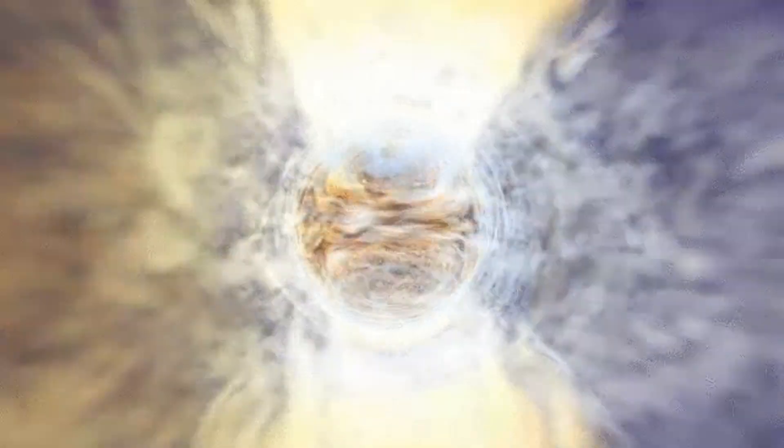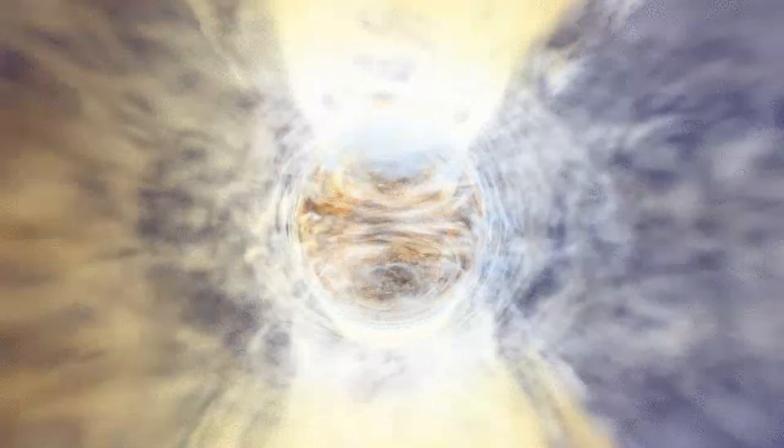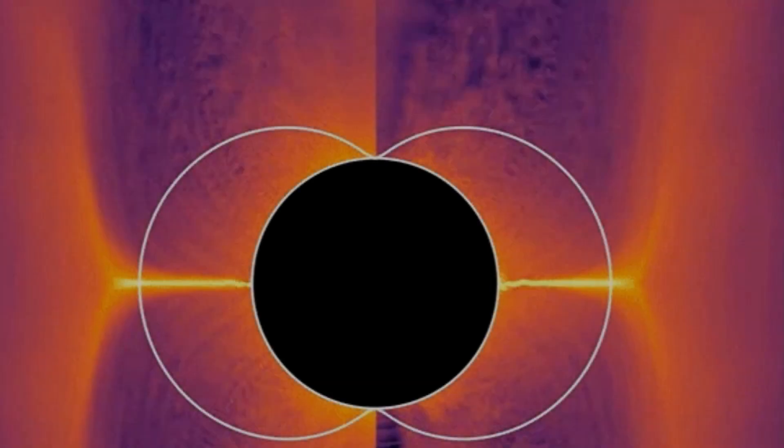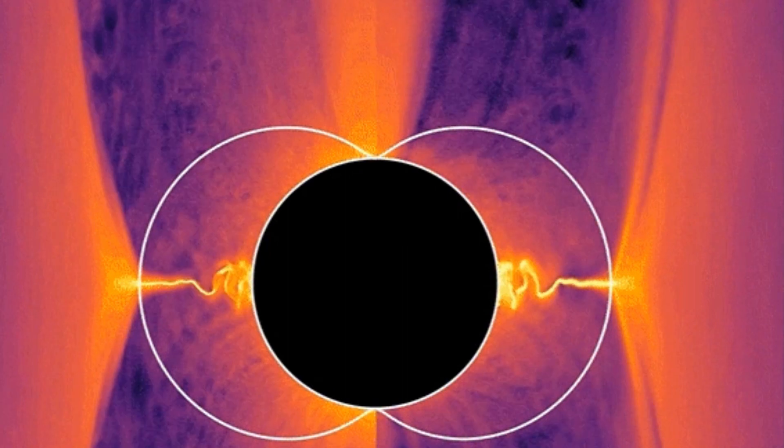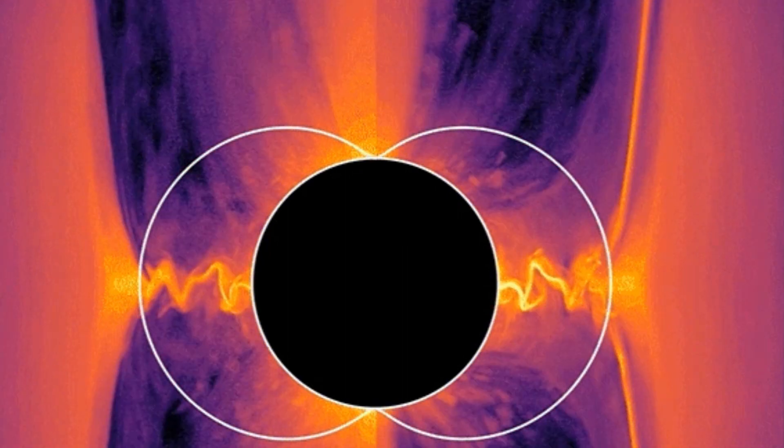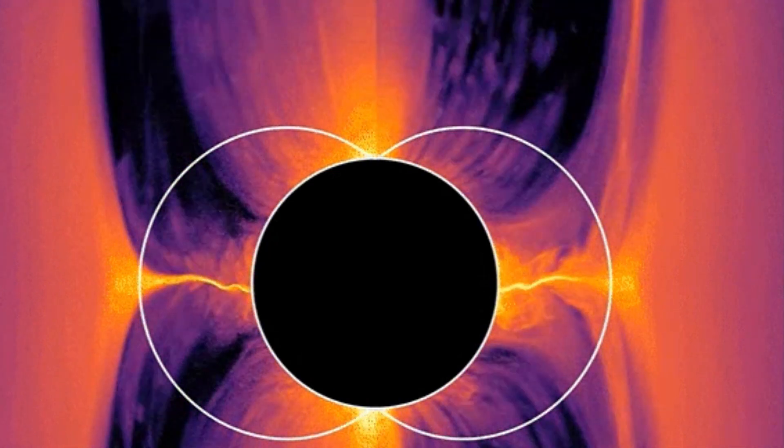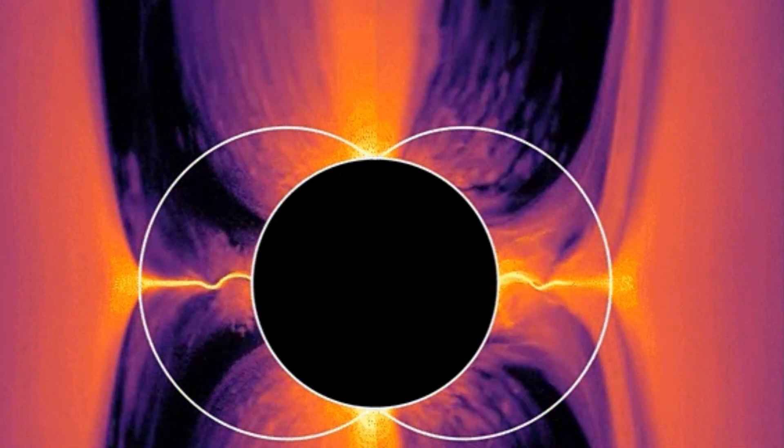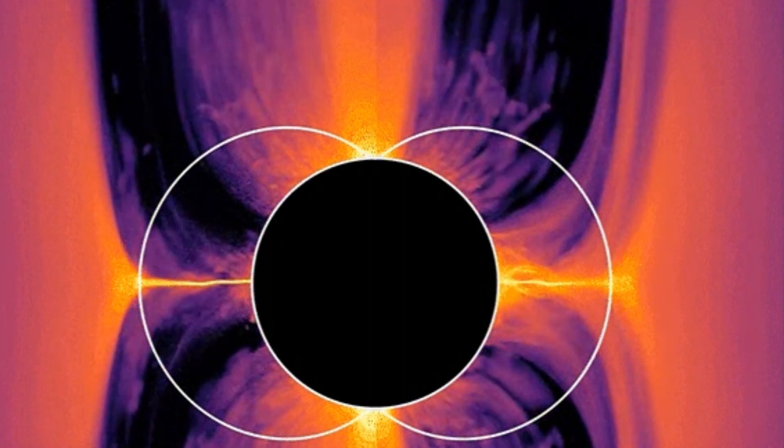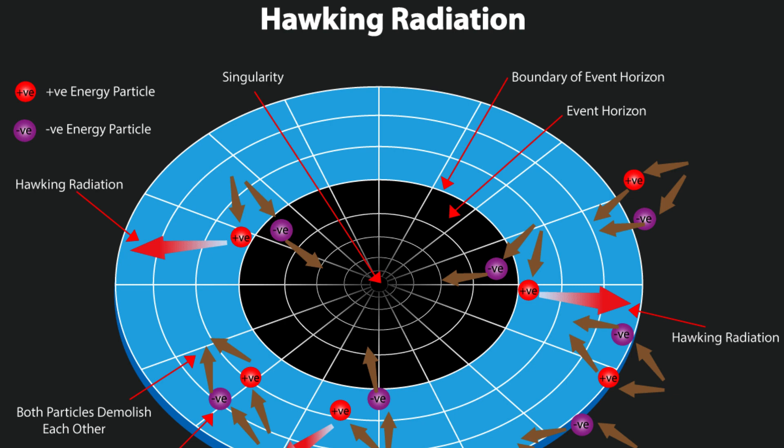This process violates the classical law of energy conservation. Near the event horizon, where the gravitational field is incredibly strong, the energy required to create these particle-antiparticle pairs is borrowed from the black hole's gravitational energy. Over time, as the black hole emits Hawking radiation, it loses mass.